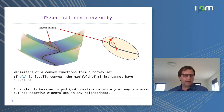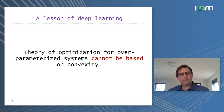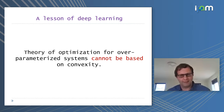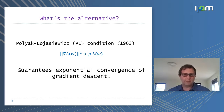This is the first lesson of deep learning as far as optimization is concerned: a theory of optimization for over-parameterized systems cannot be based on convexity. If it's not based on convexity, what is it based on?